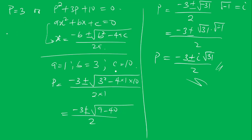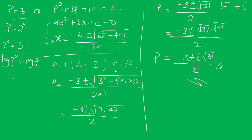So we take P equal to 3. Since we let P equal to 2 to the power X, we now have 2 to the power X equal to 3. Taking log to base 10 on both sides gives log of 2 to the power X base 10 equal to log 3 base 10. According to the law of logarithms, log a to the power m base b equals m times log a base b.